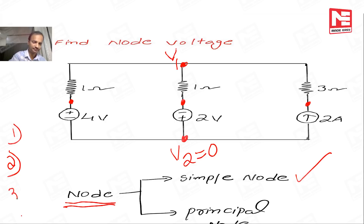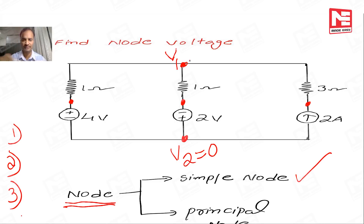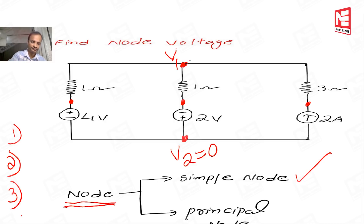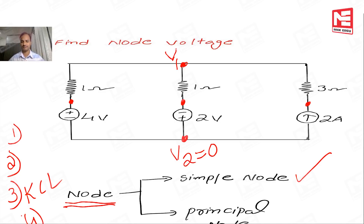Come to the third step. We have to derive the KCL equation at each non-reference node. In this example, V1 is the non-reference node, so you have to derive the KCL equation there. The last step is: by solving the KCL equations, we can find out the node voltage. Let us see how the KCL equation can be developed.